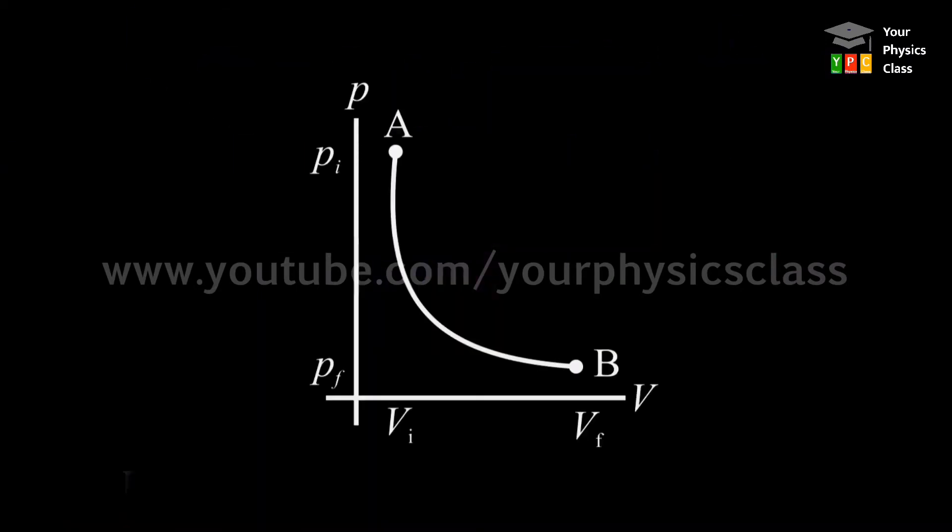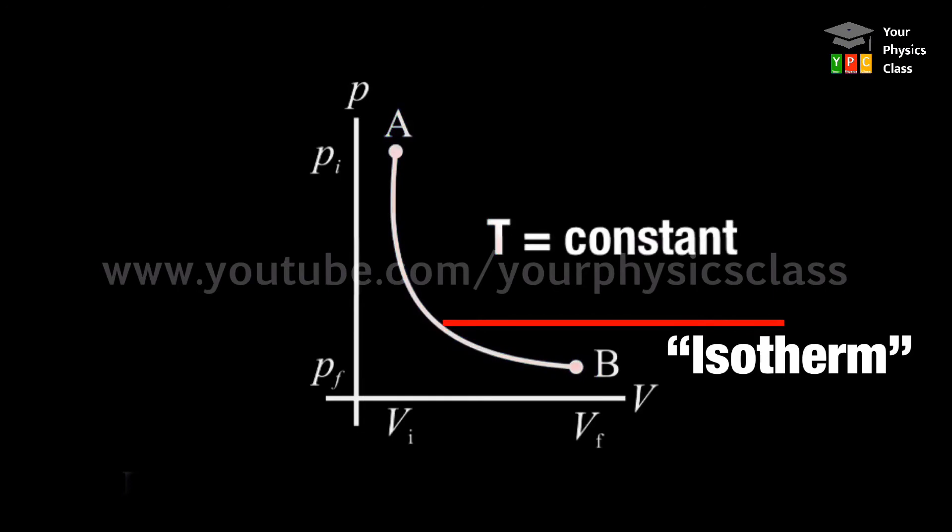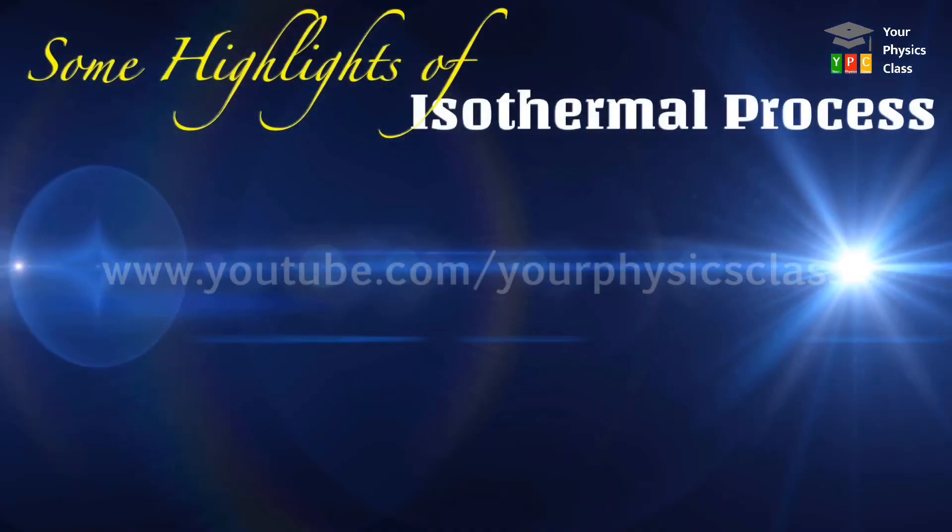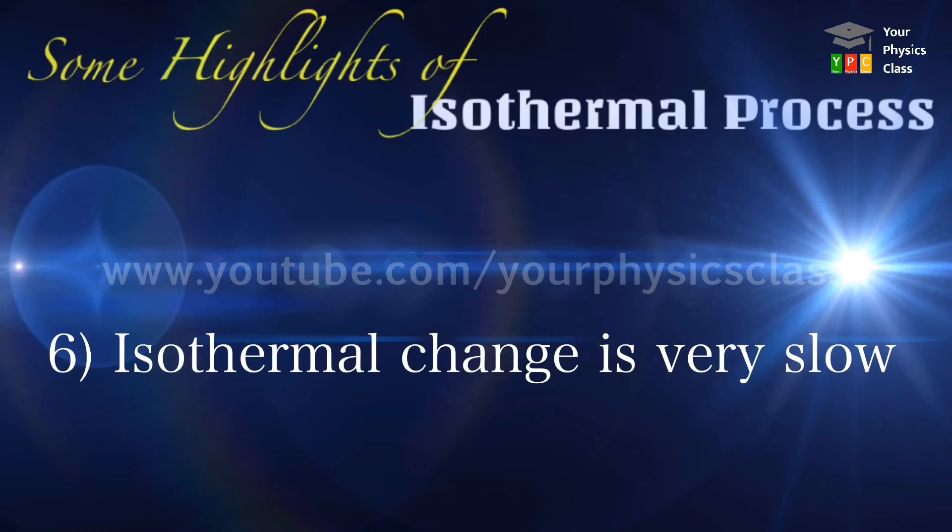Any change of phase occurs at constant temperature is called isothermal process. The PV diagram of an isothermal process is shown on your screen. It is called isothermal since the process occurs at constant temperature. Let us revise the isothermal process. In this process, equation of state is PV equals constant. The temperature change is zero throughout the process. The change in internal energy is also therefore zero. The heat supplied is used for work done. External work done is nothing but the product of constant pressure and change in volume. An isothermal change is a very slow change. The system exchanges heat with its surrounding and is in thermal equilibrium with it throughout the change.